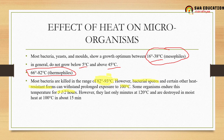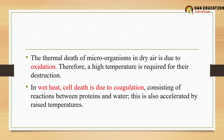Bacterial spores and heat-resistant forms last only minutes at 120°C. They can be destroyed by moist heat at 100°C in about 15 minutes. So at 120°C they survive only a few minutes, but at moist heat of 100°C they survive up to 15 minutes. The thermal death of microorganisms in dry heat is usually due to oxidation, while in wet heat it is due to coagulation.